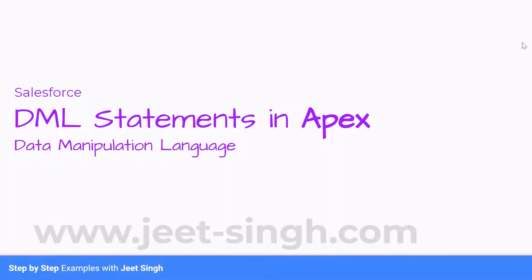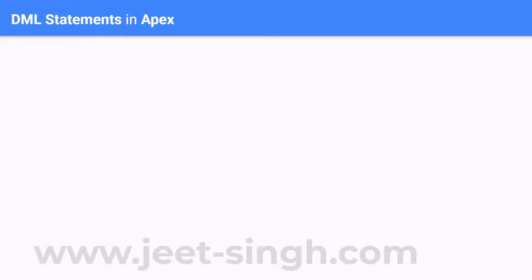What is DML? DML stands for Data Manipulation Language. These are the statements which are used for making changes to the data — that's the reason why it's called Data Manipulation Language. Changes to the data as in creating a record, updating a record, and deleting a record. These are the operations which you can do using DML statements.